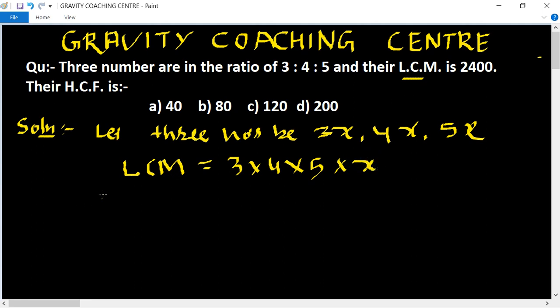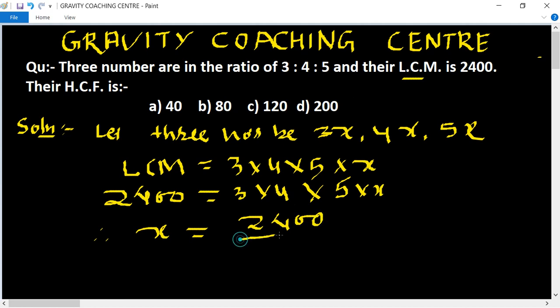LCM already given. 2400. 3 into 4 into 5 into X. So therefore, X equal to 2400 upon 3 into 4 into 5.